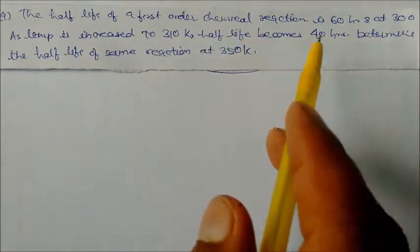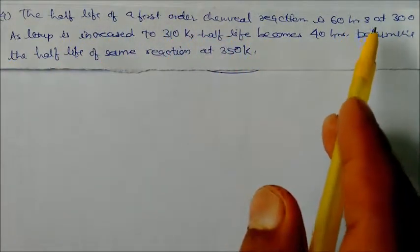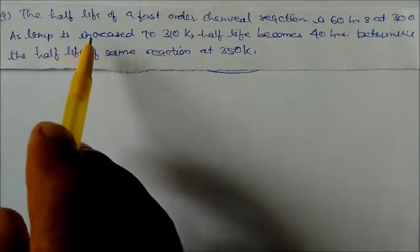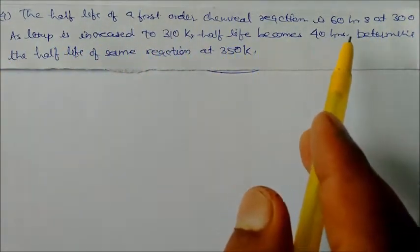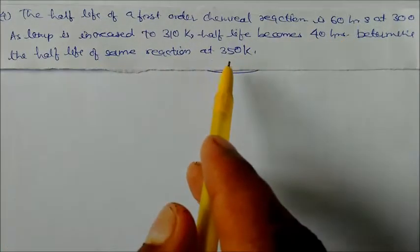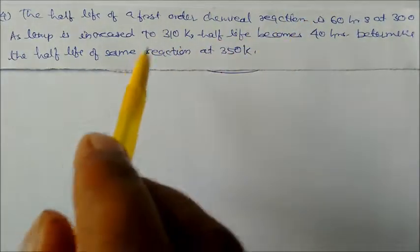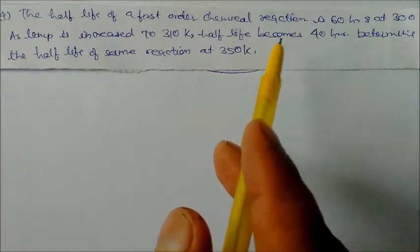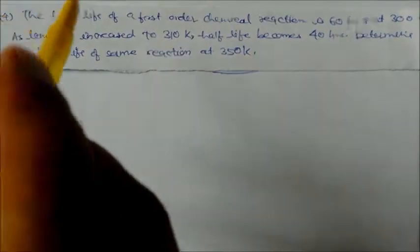Next problem: The half-life of a first order chemical reaction is 60 hours at 300 K, and as temperature increases to 310 K the half-life becomes 40 hours. Determine the half-life at 350 K. We first need to find the activation energy, which is common for both temperature cases.